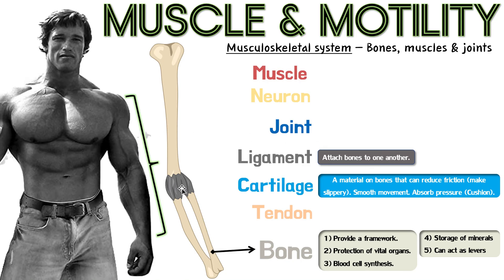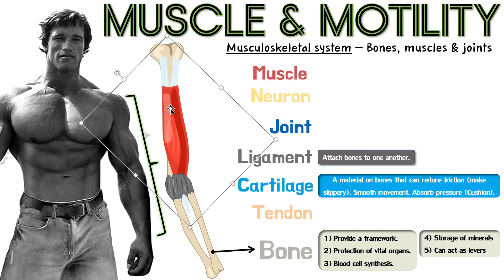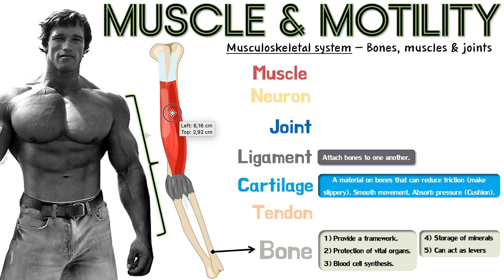So now our joint is nice and smooth — there's no friction because of the cartilage, and our bones are now linked together. Can our bones move by themselves? Unfortunately not — we need muscle. And this is especially Arnold Schwarzenegger, he has humongous muscles, so the muscle is going to come here.